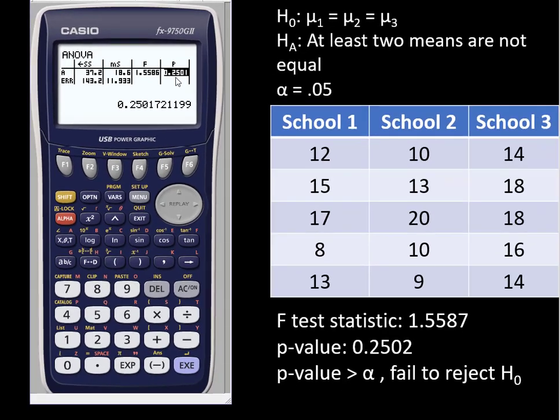We ran the test at a level of significance of 5%. The p-value of 25% is greater than alpha, we fail to reject the null. That's how to run one-way ANOVA in the Casio.